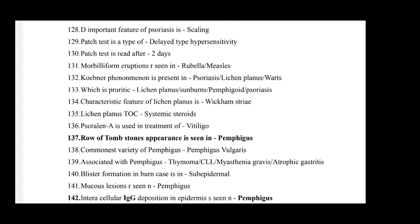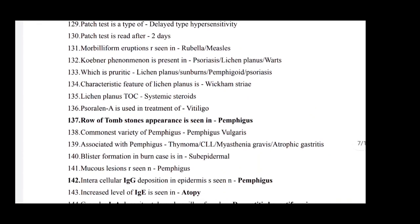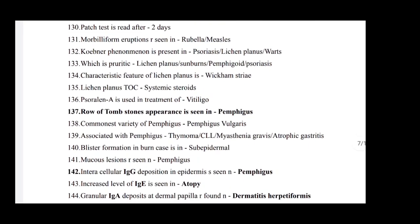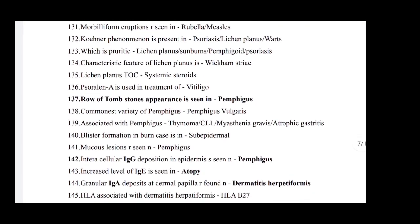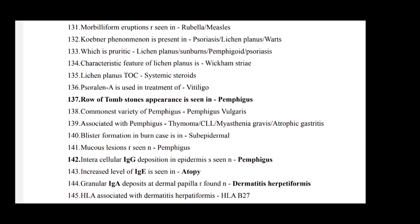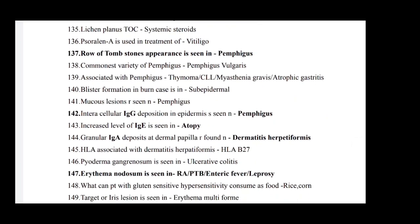Removal of a scale in psoriasis with bleeding spots is called Auspitz sign. Ash leaf macule is found in tuberous sclerosis. Important feature of psoriasis is scaling. Patch test is a type of delayed type hypersensitivity. Patch test is read after two days. Morbilliform eruptions are seen in rubella and measles. Koebner phenomenon is present in psoriasis, lichen planus, and warts. Lichen planus is pruritic. Characteristic feature of lichen planus is Wickham's striae. The three M's of lichen planus: treatment of choice is systemic steroids.